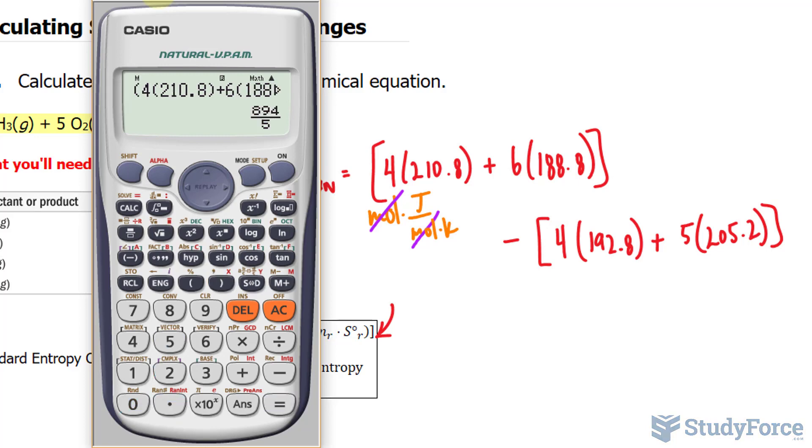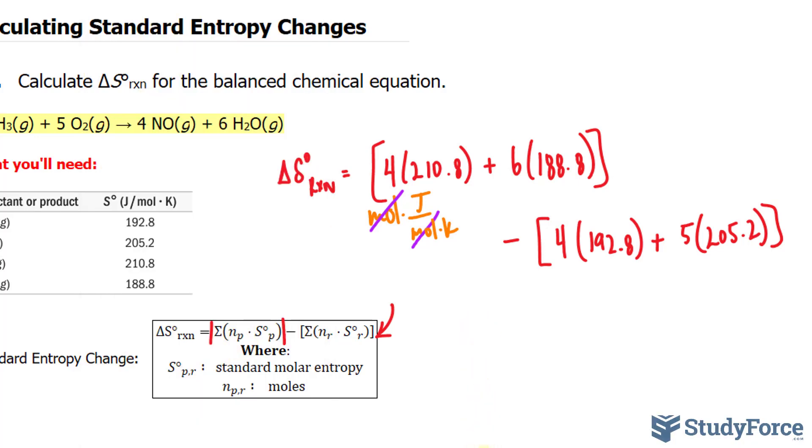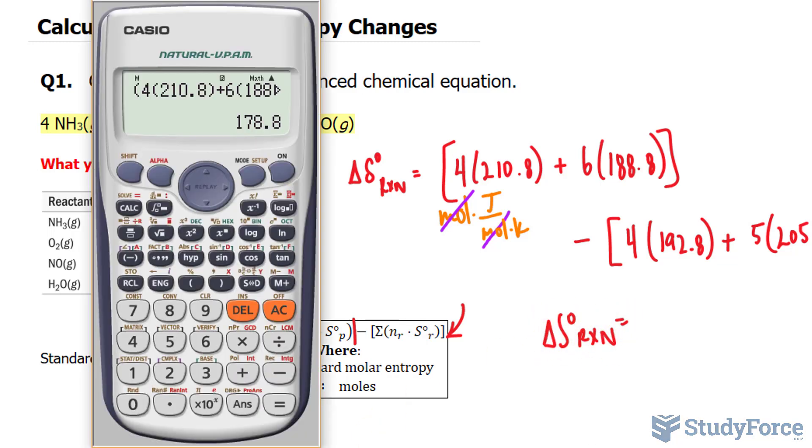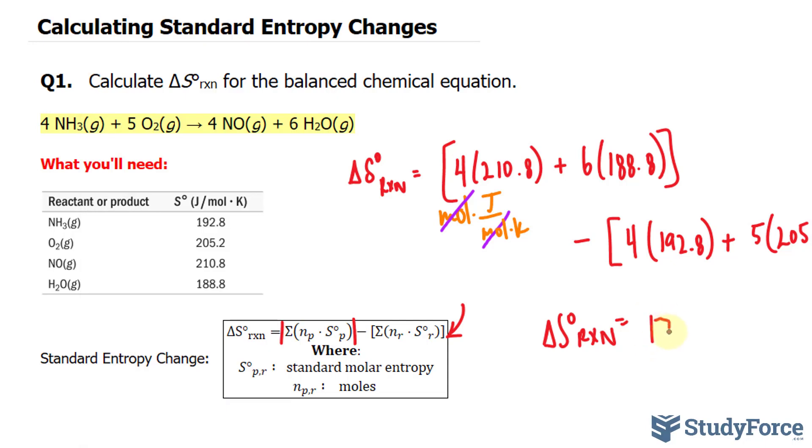And we end up with 178.8. So the standard entropy change for this reaction is equal to 178.8 joules per Kelvin.